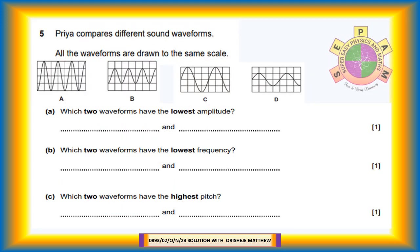Question 5. Priya compares different sound waveforms. All the waveforms are drawn to the same scale. Question 5a: Which two waveforms have the lowest amplitude? Wave B and wave D. Question 5b: Which two waveforms have the lowest frequency? Wave C and wave D.